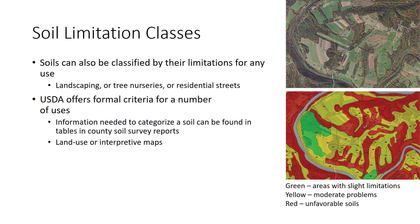Besides the USDA capability classes, soils can also be classified by their limitations for any use, perhaps for landscaping, tree nurseries, or residential streets. In these schemes, a soil carries limitations for a given application rated as slight, moderate, or severe. Land with slight limitation is favorable for a particular use without modification. Land with moderate limitations has mild problems that can be overcome with reasonable modification and prior planning. Land with severe limitations is unfavorable for the proposed use. For instance, high shrink-swell potential, low soil strength, and severe frost action all present severe limitations for road construction.